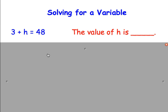The next thing we're going to be talking about is solving for a variable. So if we're trying to solve for a variable, we're trying to decide what the value of the variable is. So what that variable would have to equal in order to make the equation true. So in this one we have 3 plus H equals 48. So 3 plus what is going to equal 48? We know that 3 plus 45 equals 48.